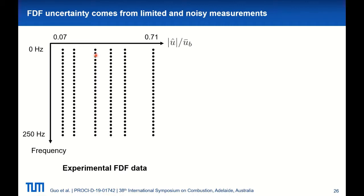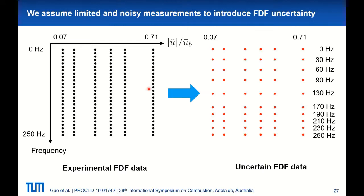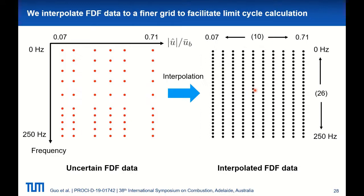In total, the experiment measured six acoustic oscillation amplitudes, and for each amplitude level, it measured gain and phase values at every 10 Hz. In practice, FDF data uncertainty is induced by limited data quantity and data quality. We can only measure FDF gain and phase at limited amplitudes and frequencies — that's the data quantity issue — and those measurements are not perfect; they have measurement error, which is the data quality issue. To mimic this uncertain generation process, we only use measurement data at selected frequencies. For gain at each measurement location, the measurement uncertainty follows a normal distribution with the mean being the original experimental value and the standard deviation being 10% of the mean. For phase, we assume a similar normal distribution with standard deviation being 5% of the mean.